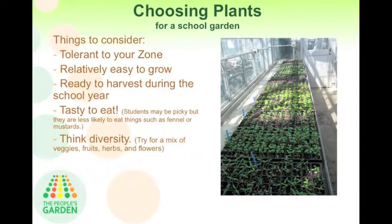Try to think about having some diversity in your garden — not only planting annual veggies, but also thinking about fruit. You could plant berries if you have the space. Even fruit trees are a wonderful addition to a school property. Herbs, both medicinal and culinary, are really great to touch and smell, getting all those sensory experiences going for the students. They really like to smell them and taste them. And of course, flowers — flowers for beauty and for attracting pollinators.